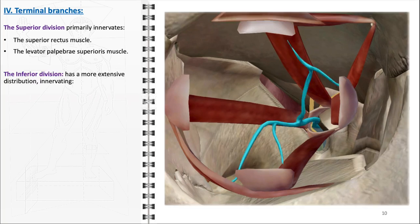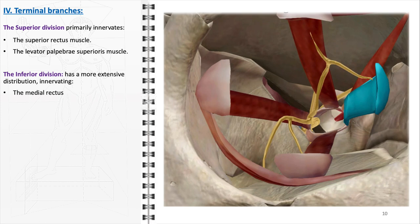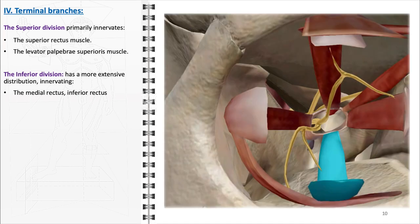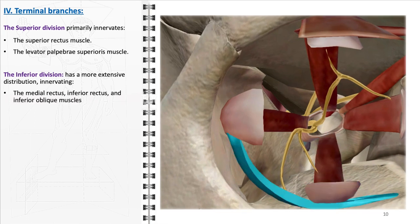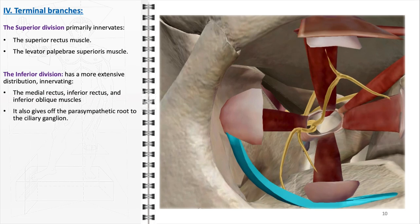In contrast, the inferior division of the oculomotor nerve has a more extensive distribution, reflecting its broader functional responsibilities. It innervates three key extraocular muscles: the medial rectus, which moves the eye medially towards the nose; the inferior rectus, responsible for depressing the eyeball (downward gaze); and the inferior oblique, which helps in elevating and extorting (outward rotation) of the eye. Moreover, the inferior division also has an essential autonomic component. It gives off the parasympathetic root to the ciliary ganglion, a small parasympathetic ganglion located in the orbit. The fibers from this root innervate the sphincter pupillary muscle, inducing pupillary constriction, and the ciliary muscle, responsible for controlling the shape of the lens for near vision.